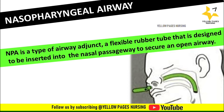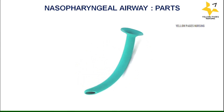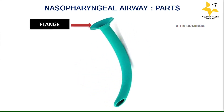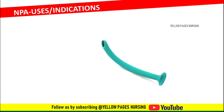Moreover, NPA is used to reduce or prevent upper airway obstruction. The proximal end of the nasopharyngeal airway looks flat, called the flange, which prevents the tube from slipping inside the nose. Next is the hollow cannula, and then is the distal tip, which is beveled to facilitate insertion.